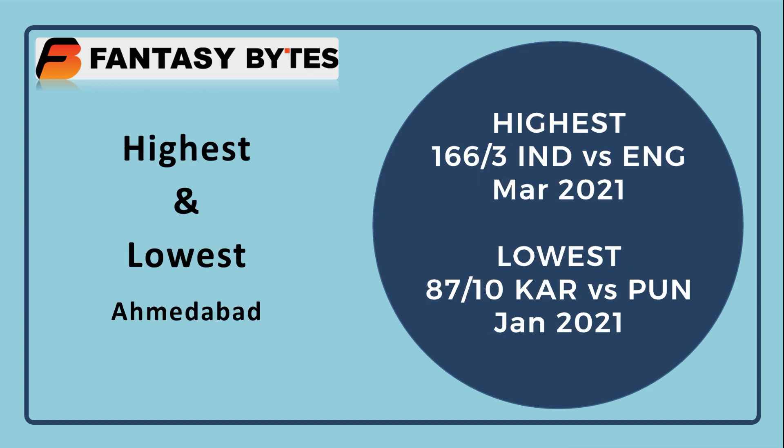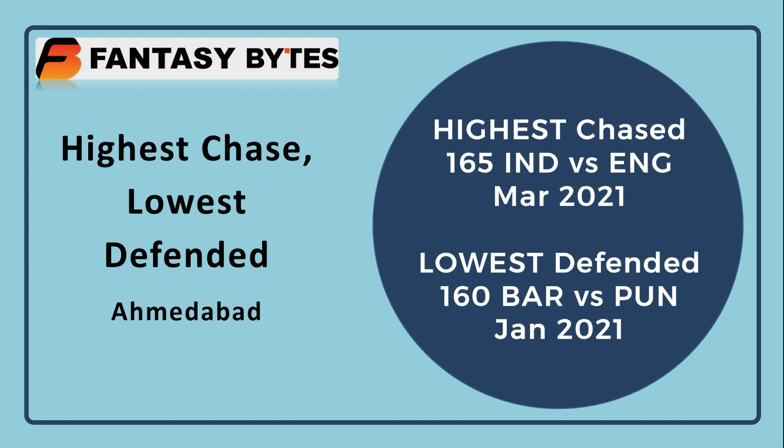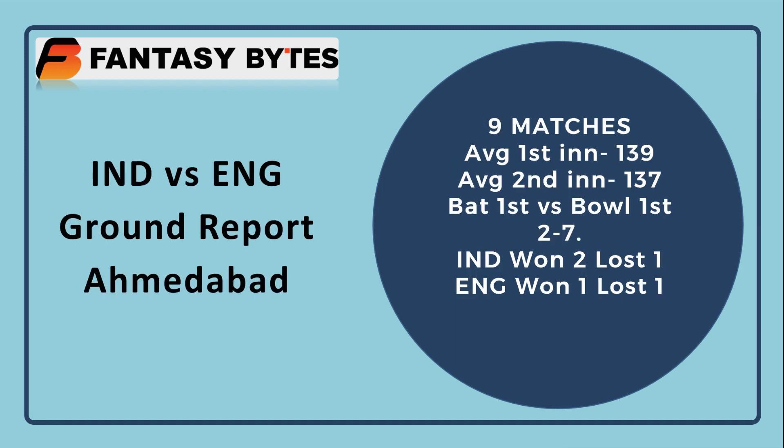In the last 9 matches at this Ahmedabad ground, the highest score was India's chase of 166 for 3 in the previous match. The lowest score here is 87 all-out, the highest successful run chase was also India's in the last match — they chased down 164, scored 166, and the lowest defended score here is 160.